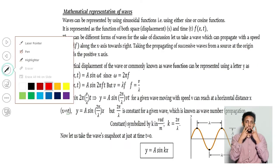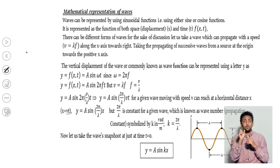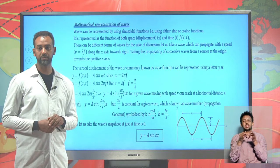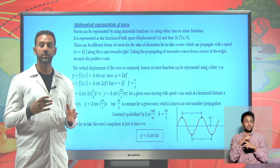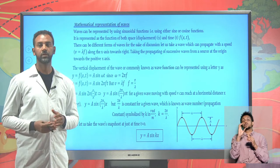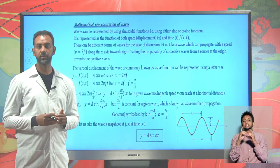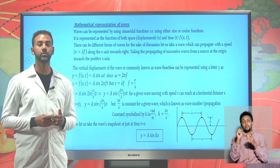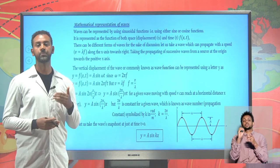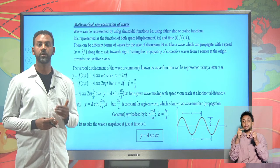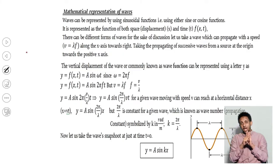Today we will try to see the mathematical expression of waves. So mathematically it is possible to express waves. Previously we used the mathematical expression of oscillatory motion, like the displacement might be given using sine or cosine function as A sin(ωt) or A cos(ωt) for an oscillatory body. It is also possible to have the velocity as negative ωA sin(ωt) or positive ωA cos(ωt).